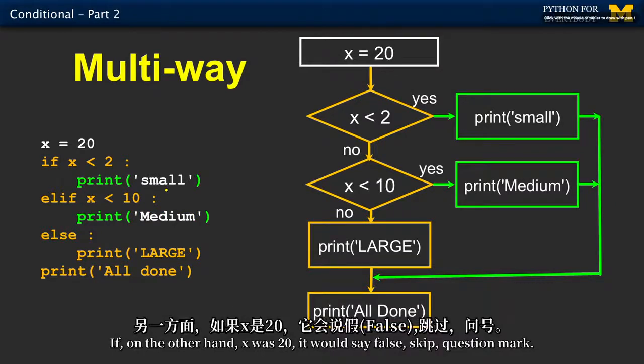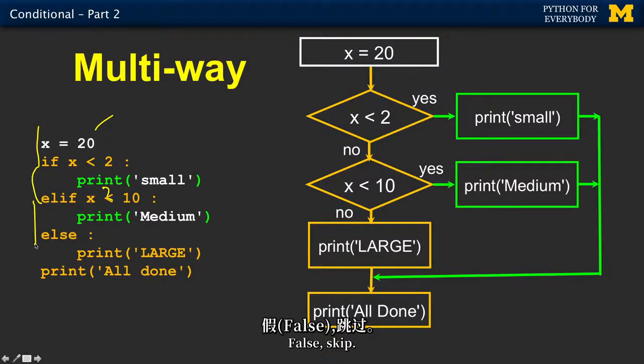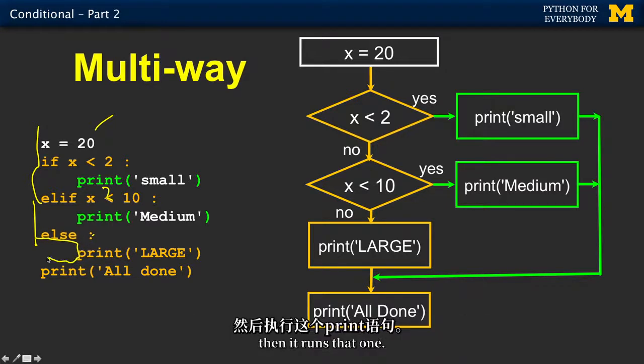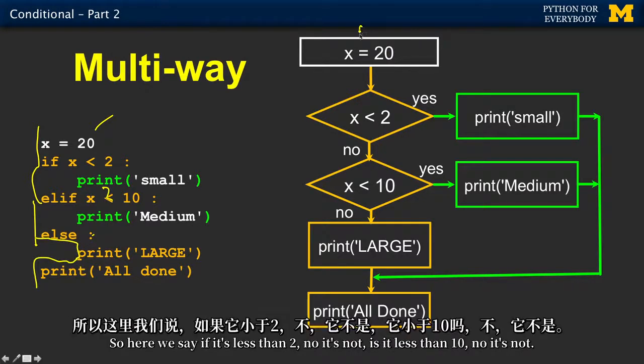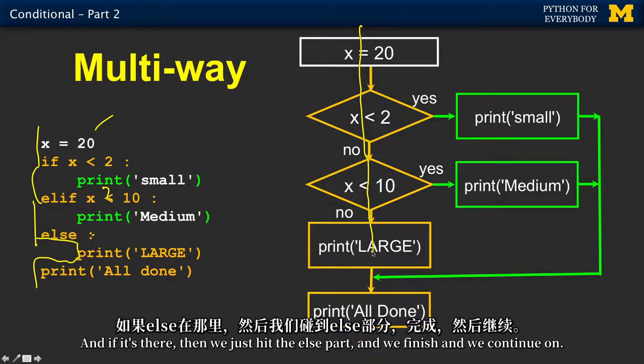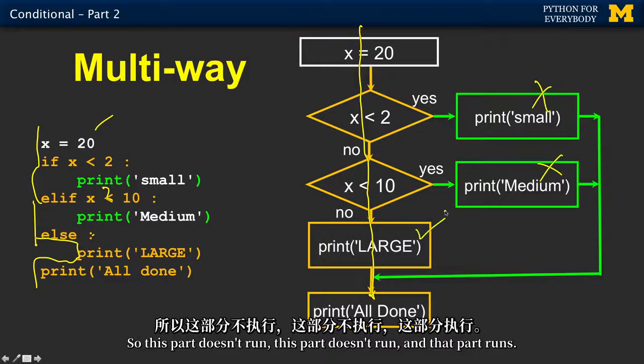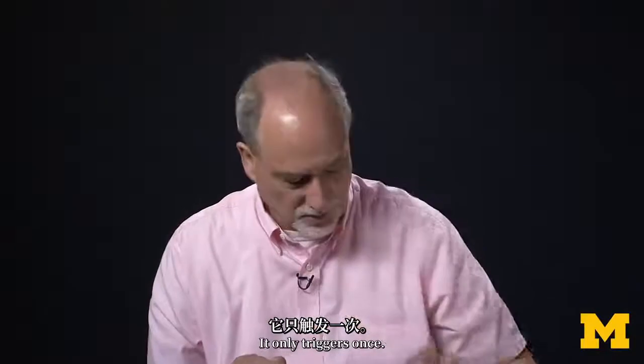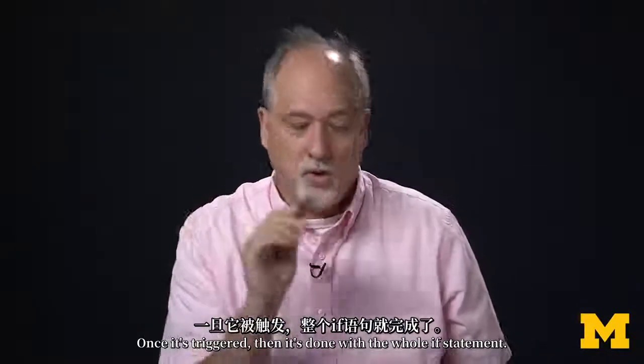If, on the other hand, x was 20, it would say false, skip, question mark, false, skip. Oh, else, then the else always gets triggered if it gets that far, and then it runs that one. So here we say if it's less than two, no it's not, is it less than ten, no it's not. And if it's there, we just hit the else part, and we finish and continue on. So this part doesn't run, this part doesn't run, and that part runs.